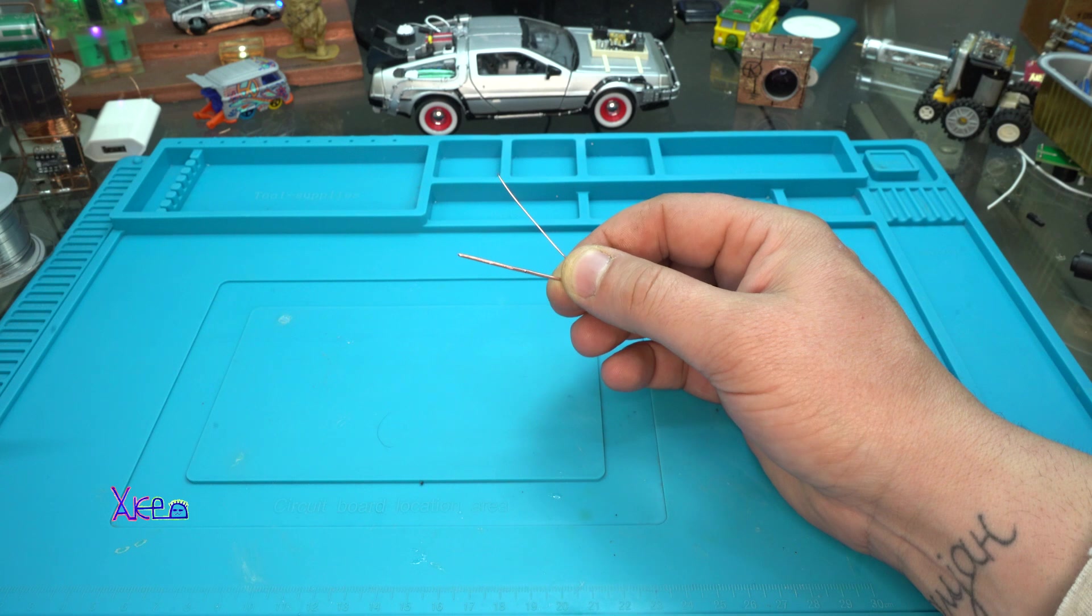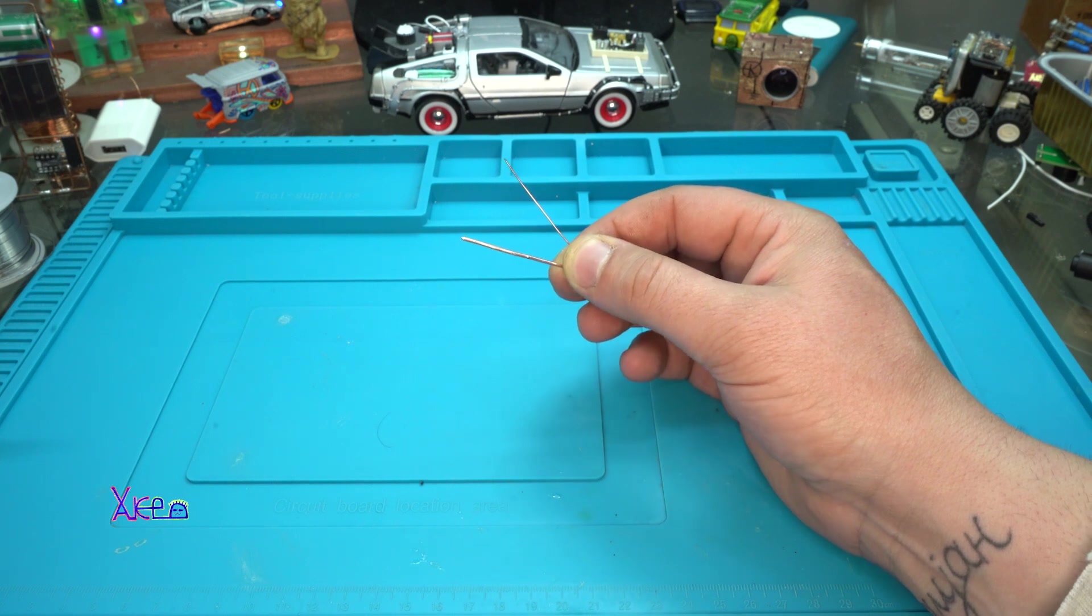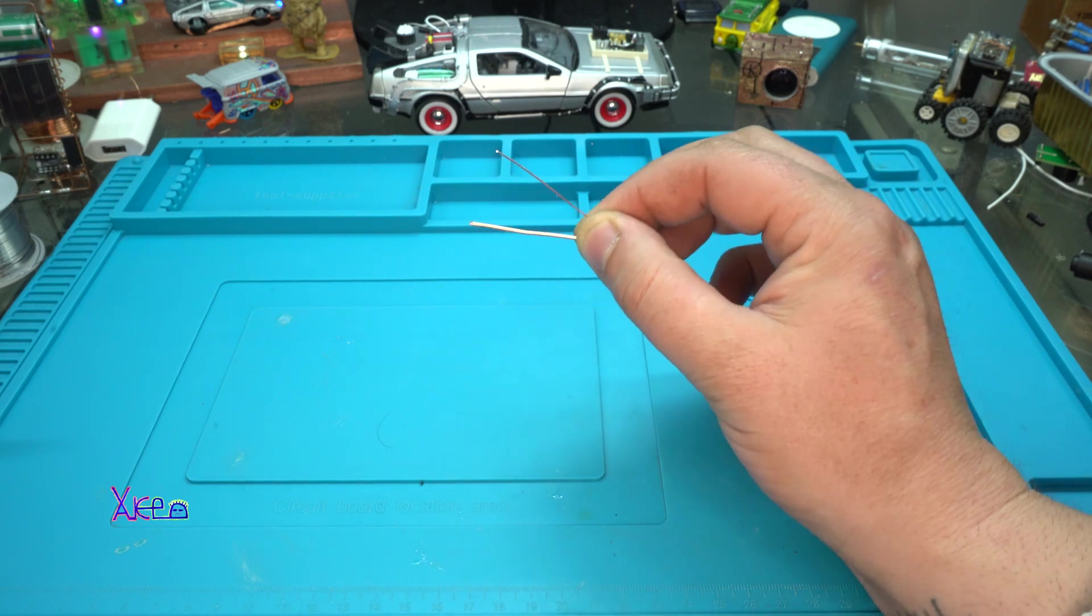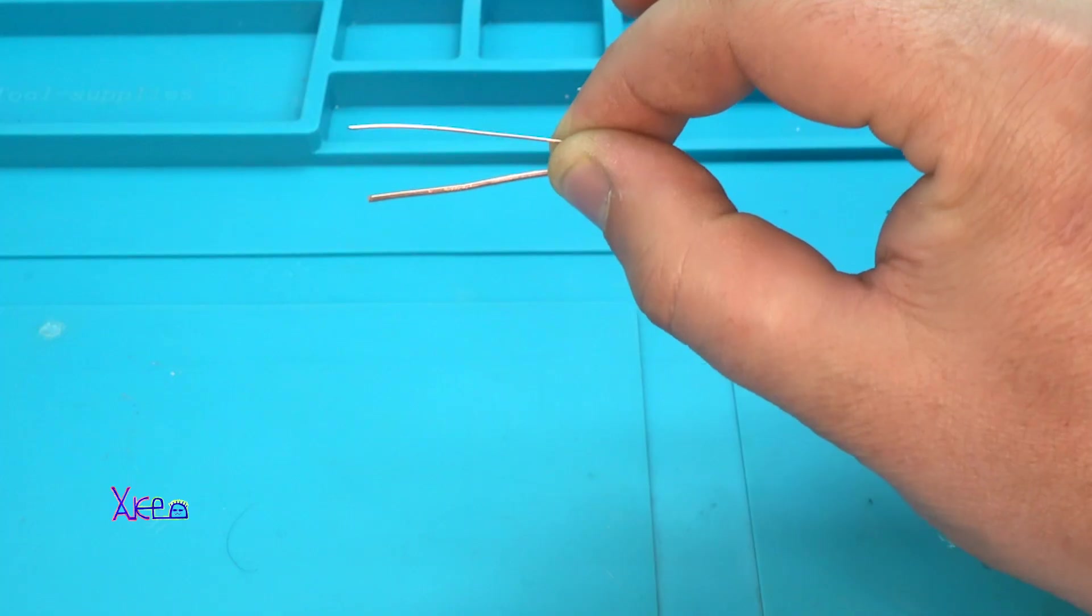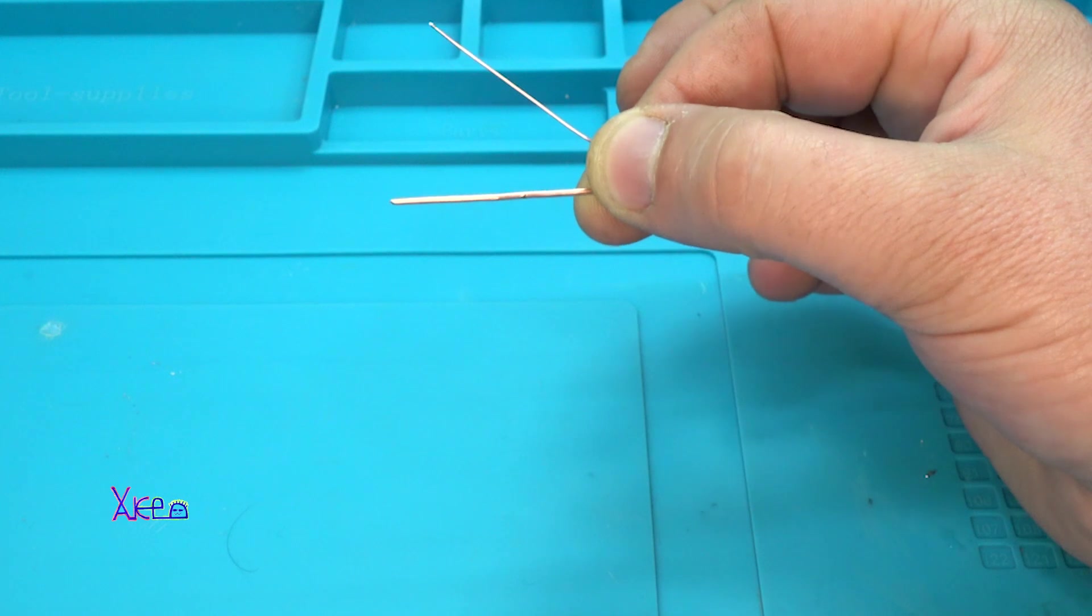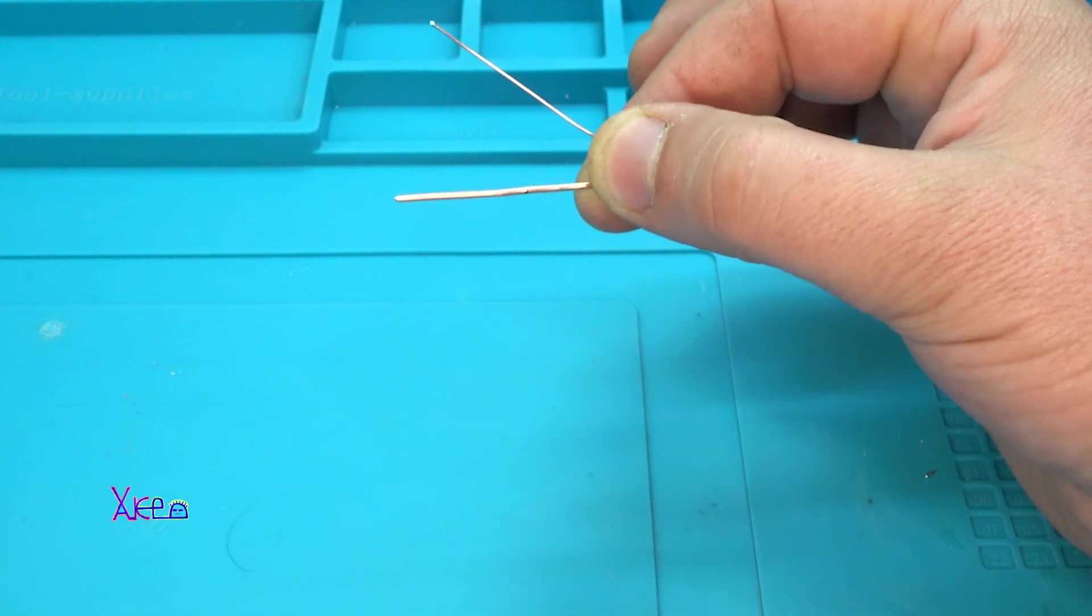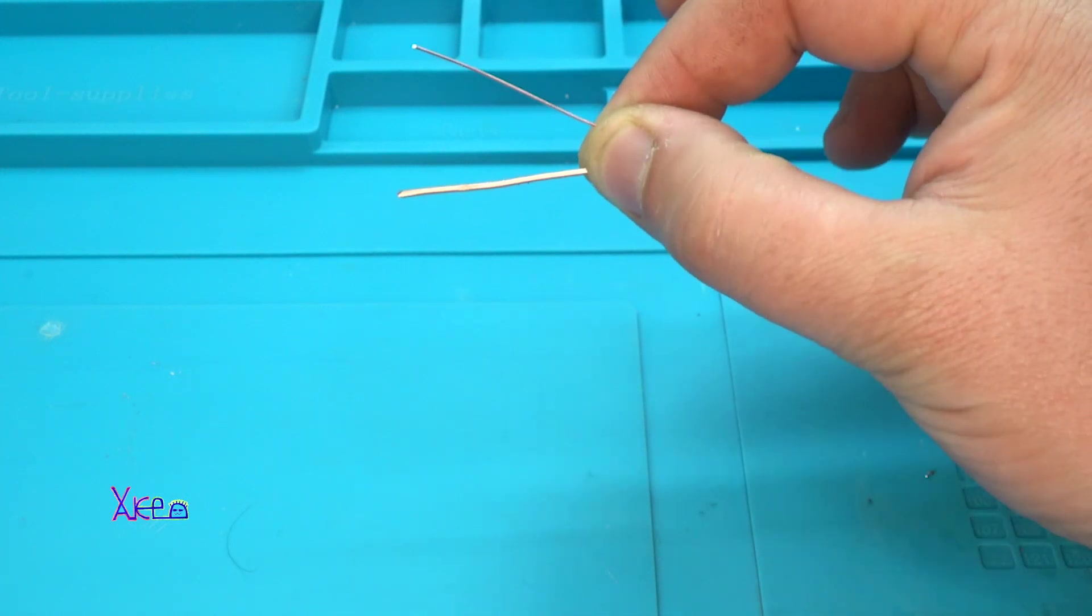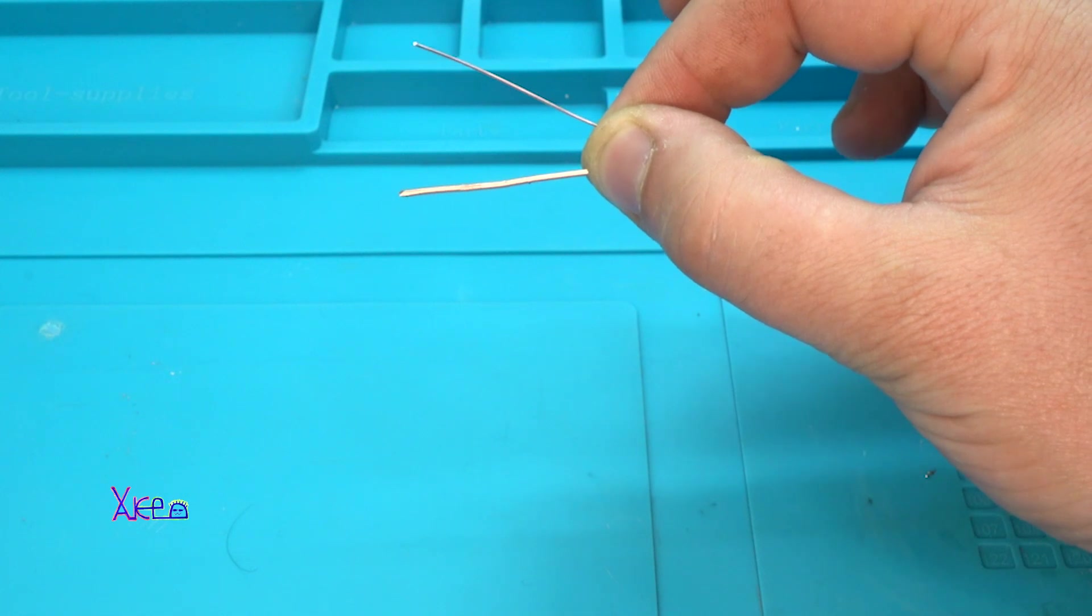For today's project I'm using solid copper wires in two dimensions. The diameter really doesn't matter, because this is a free-form electronics project and basically an electronic sculpture.